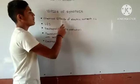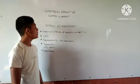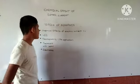First we learn chemical effect of electric current. The chemical reaction which is carried out with the help of electric current is called chemical effect of electric current.